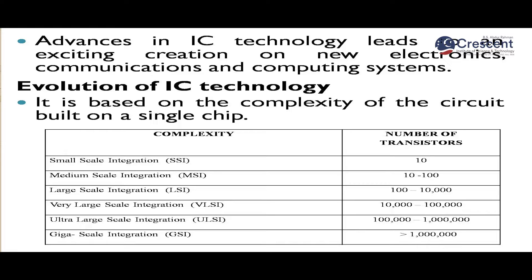The evolution of IC technology is based on the complexity of the circuit. Complexity refers to the number of transistors built into a single chip. It started with Small-Scale Integration (SSI), where only 10 transistors were integrated, followed by Medium-Scale Integration (MSI), where 10 to 100 transistors were integrated into a single chip.